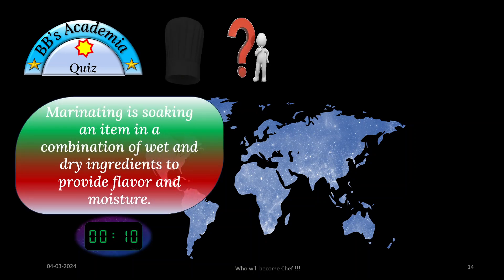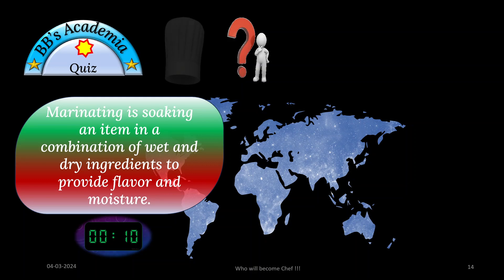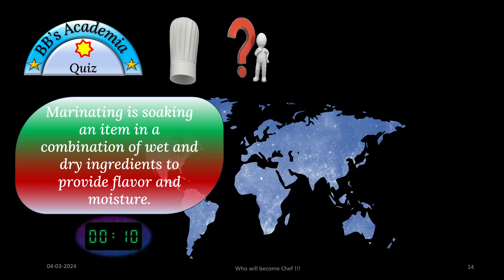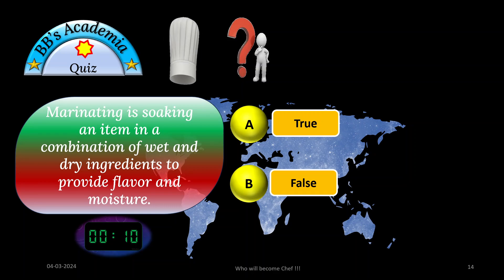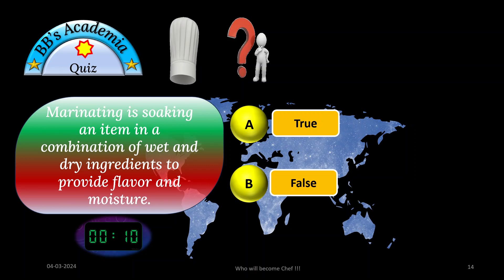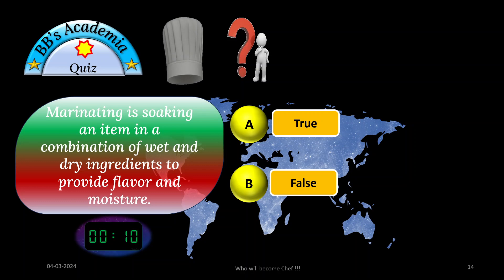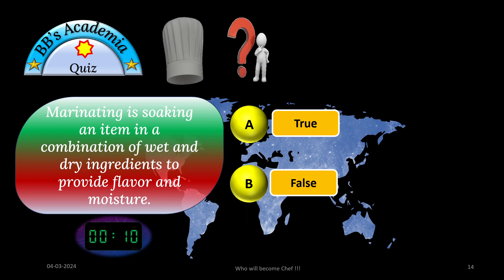Marinating is soaking an item in a combination of wet and dry ingredients to provide flavor and moisture. You are having two options — find out whether it is true or false. Time allotted: 10 seconds for you to think and reply accordingly. Your time begins now.